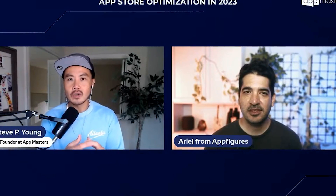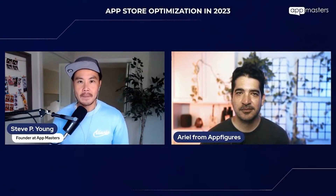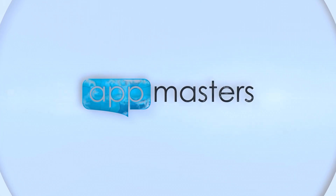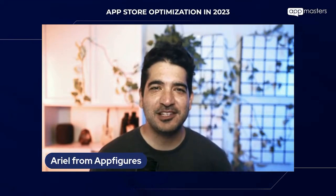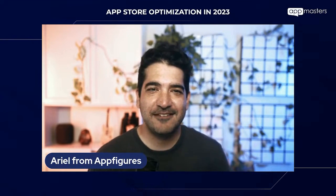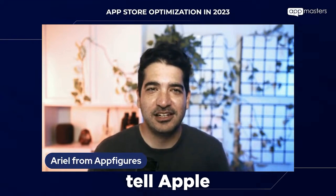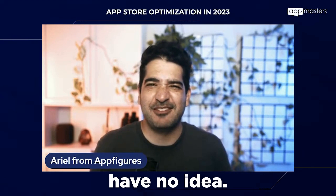For the developer who might have just launched their app or is getting no downloads, what should our ASO strategy be? A lot of people ask me, what is App Store Optimization? And I say, it's a way to tell Apple and Google what your app does, because they have no idea.